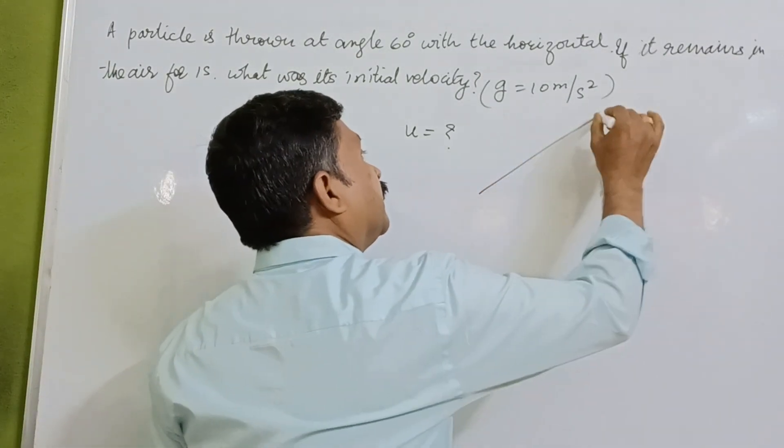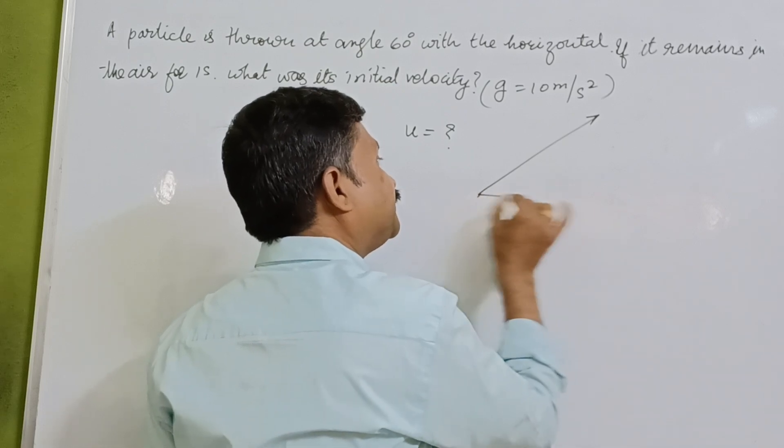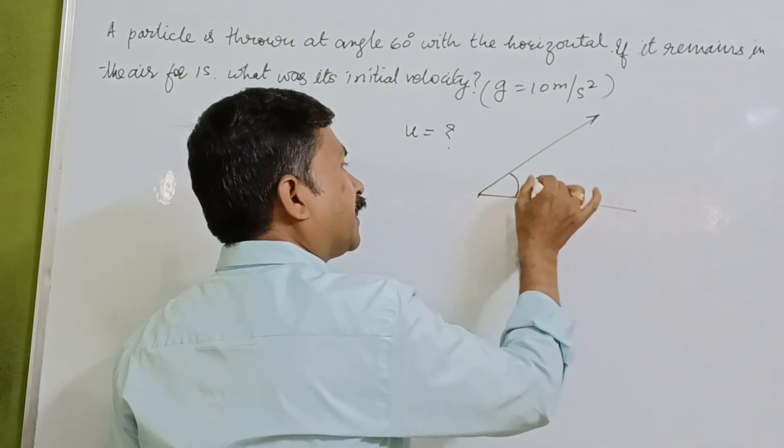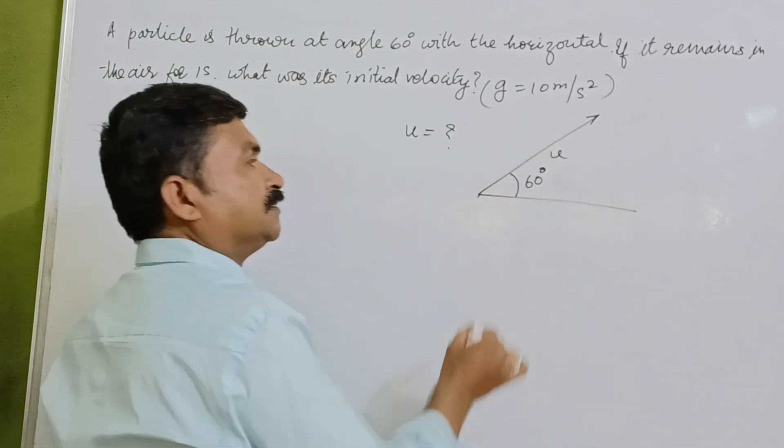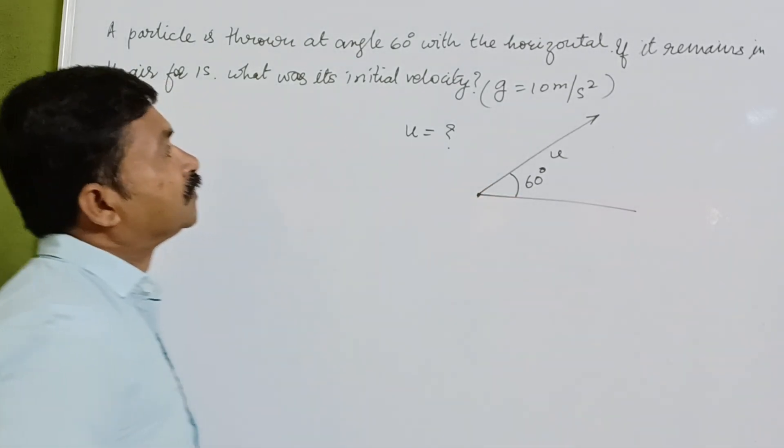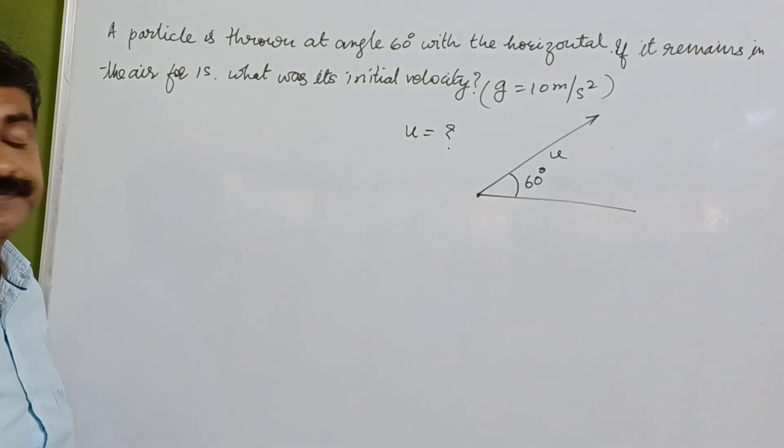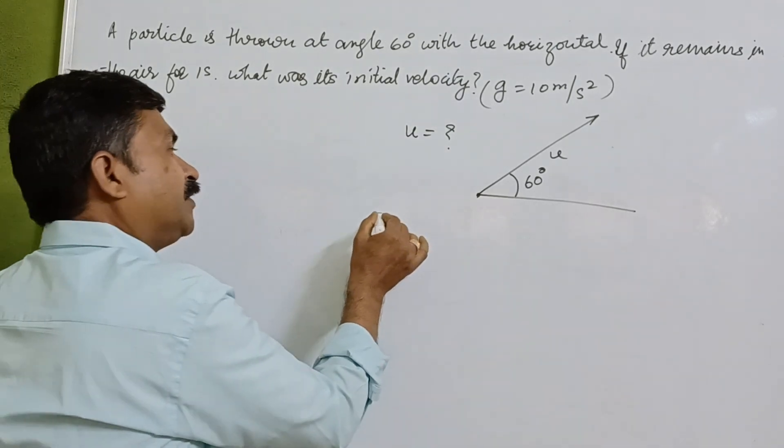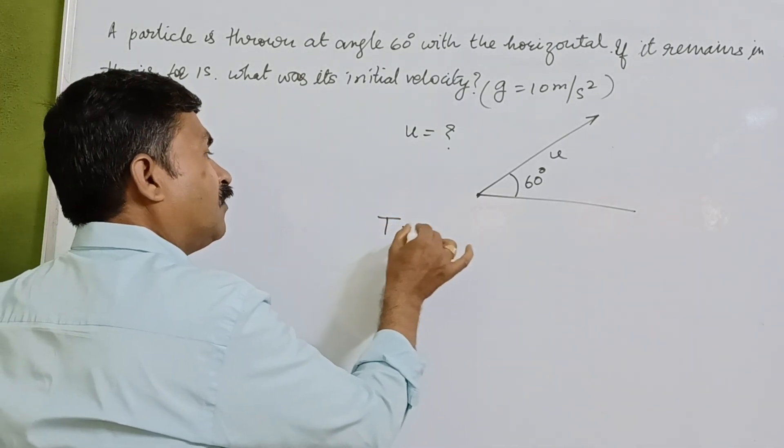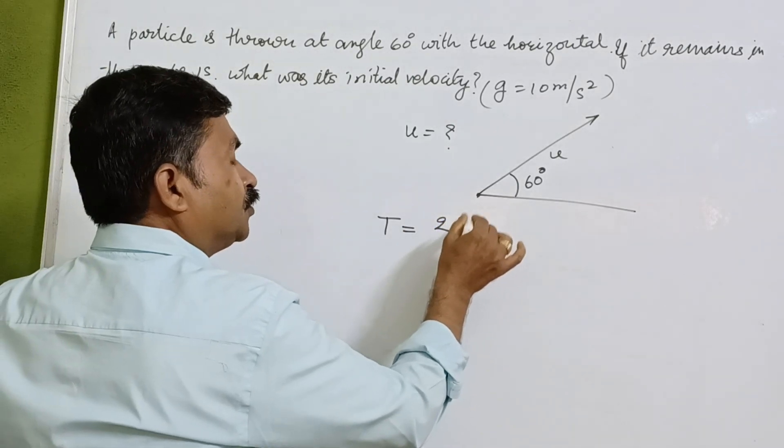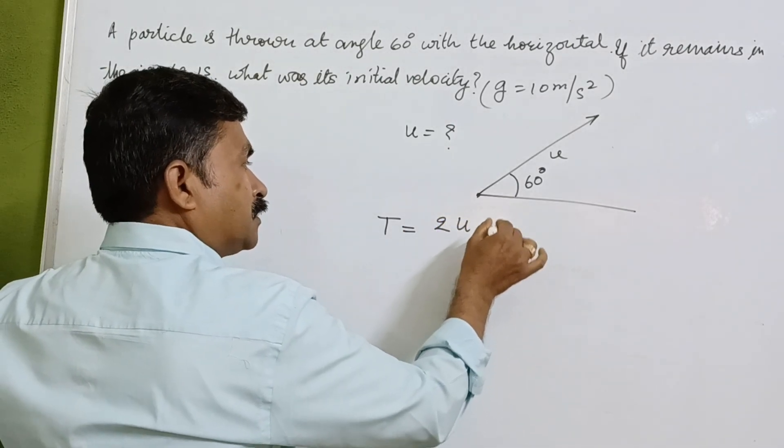If you can see here, this particle is thrown like this, making an angle of 60 degrees. Now it remains in air for one second. If we go through this, t = 2u sin θ / g, we can determine the initial velocity.